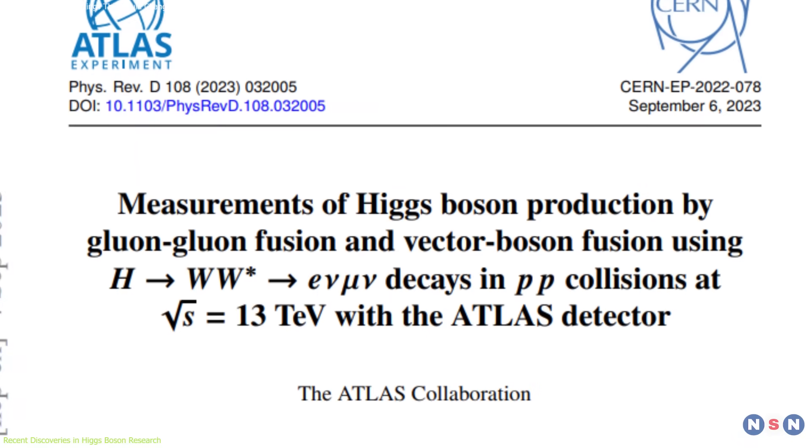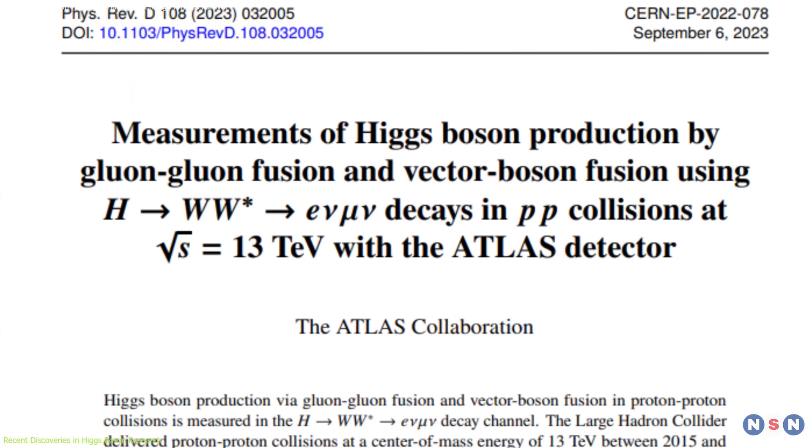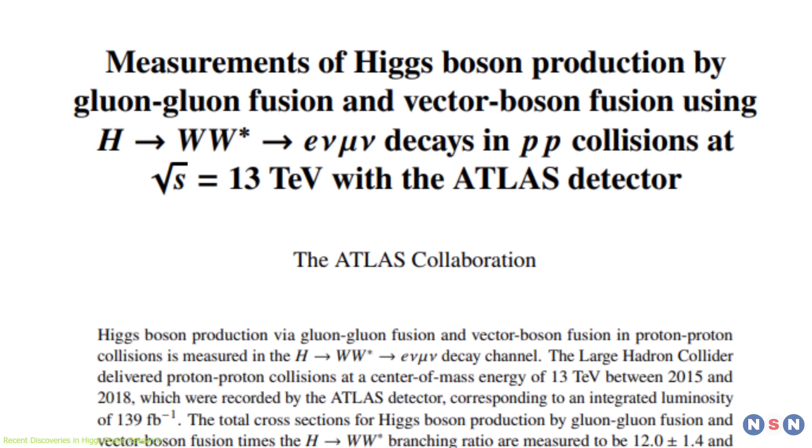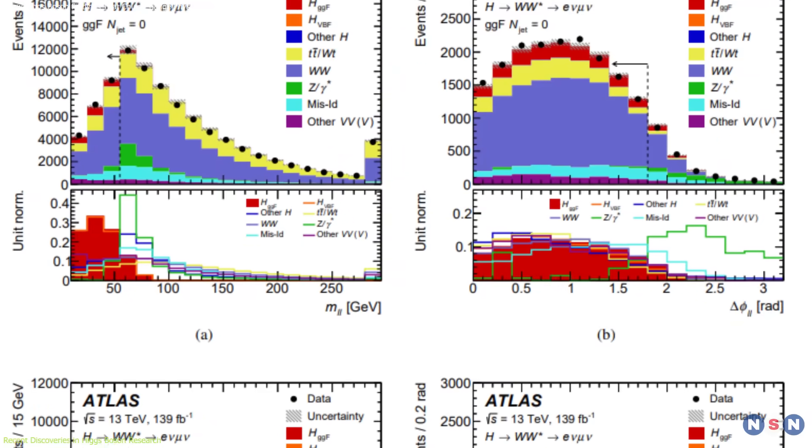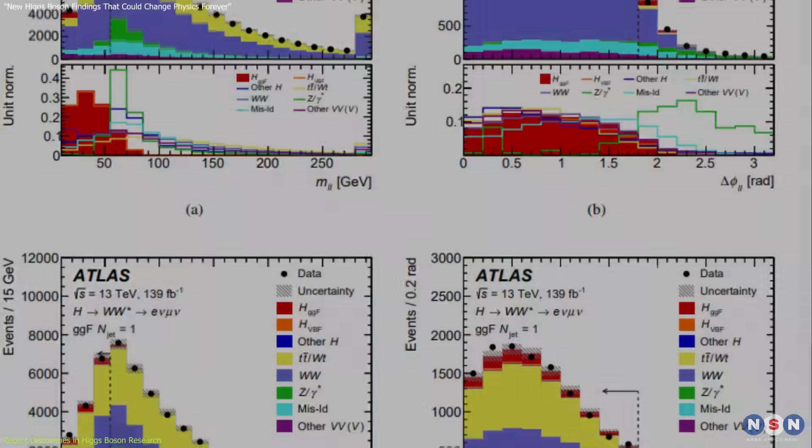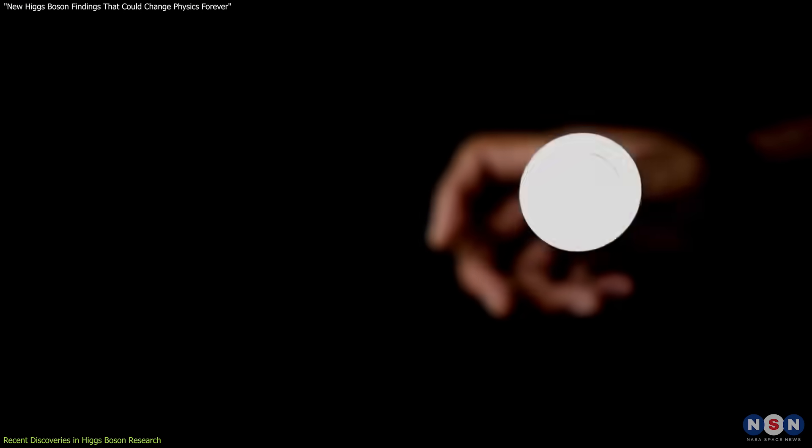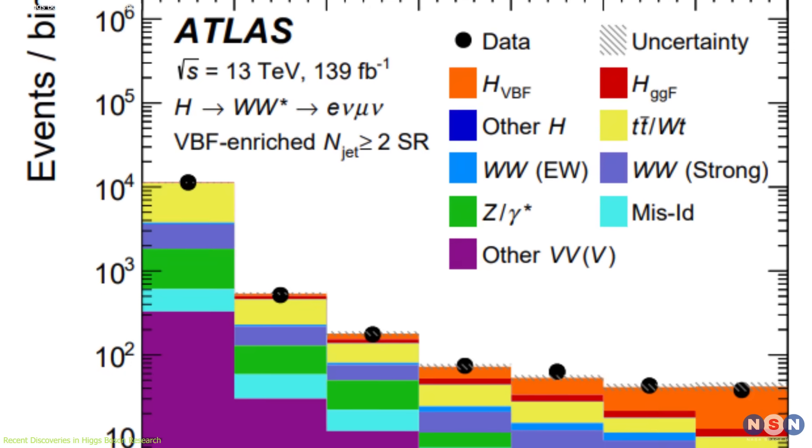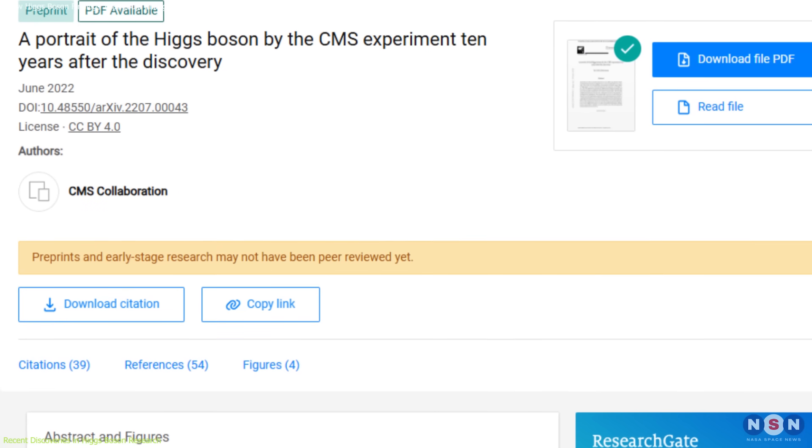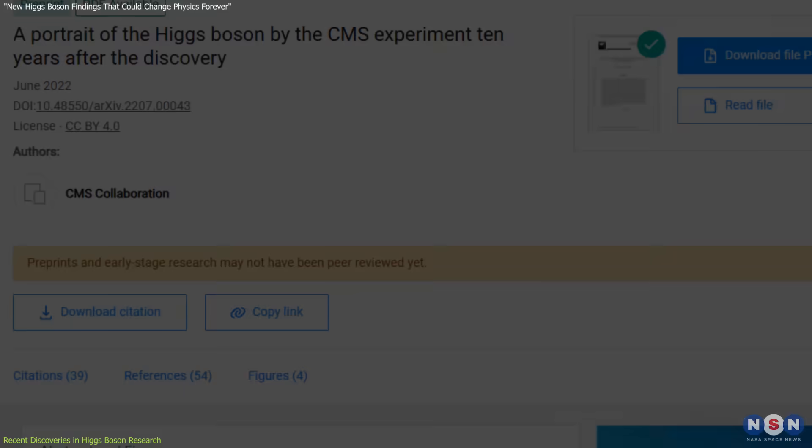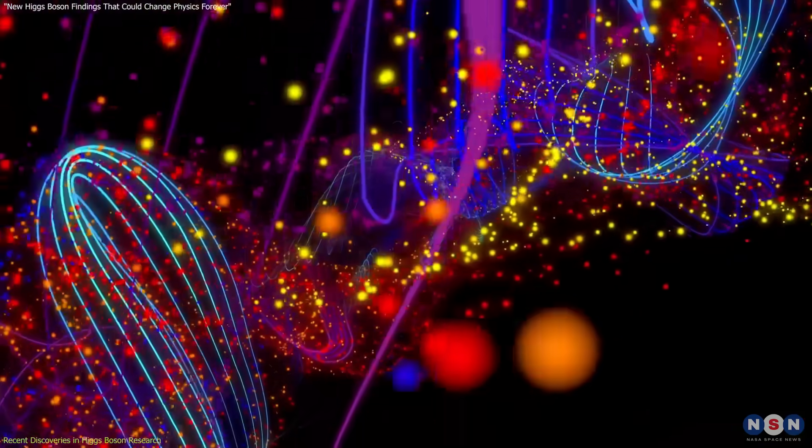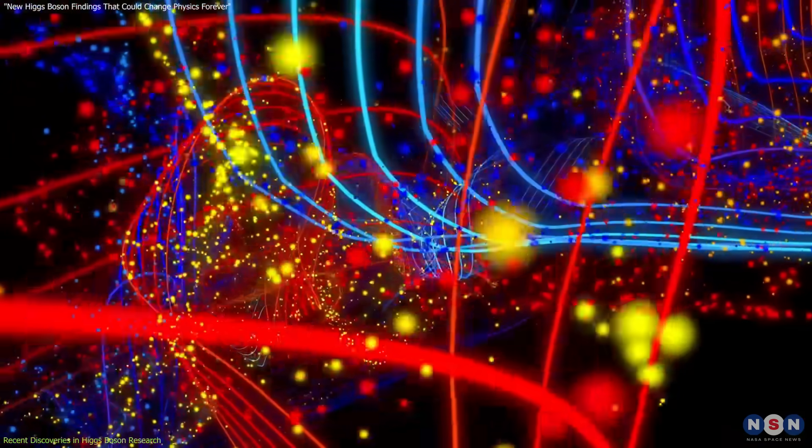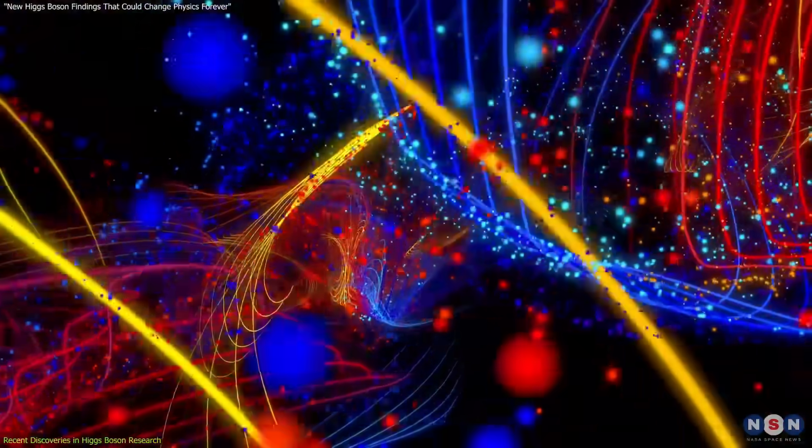One of the most groundbreaking observations involves the Higgs boson's interaction with W bosons. Data analyzed with a statistical confidence of 5.3 sigma, a level of certainty comparable to flipping a coin and getting heads over a million times in a row, confirmed the Higgs decays into bottom quarks in the presence of W bosons. This not only validates predictions from decades ago, but also serves as a significant benchmark for future explorations into particle interactions.